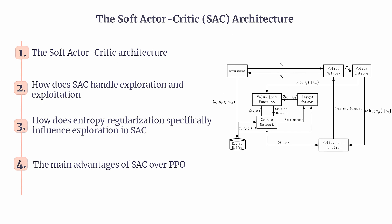SAC is an off-policy algorithm, meaning it doesn't rely only on the most recent interactions with the environment. Instead, it learns from a replay buffer filled with past experiences. This approach is super data efficient, which is a big deal when collecting new data is slow or expensive. Let's explore it in four parts: the Soft Actor-Critic architecture, how SAC handles exploration and exploitation, how entropy regularization influences exploration, and the main advantages of SAC over PPO.